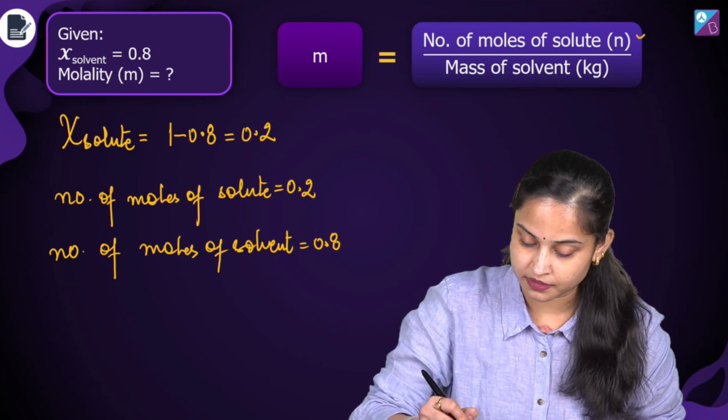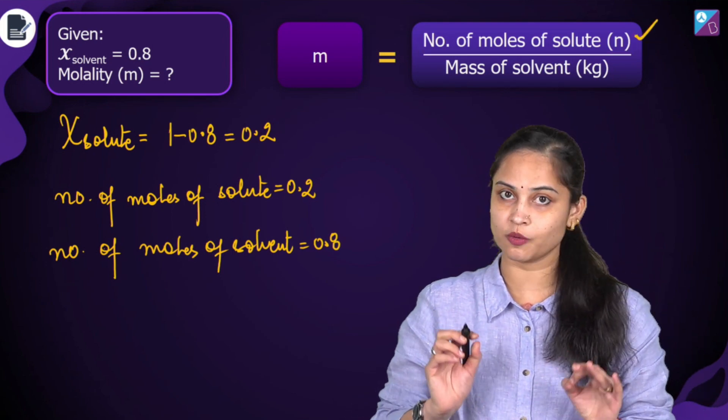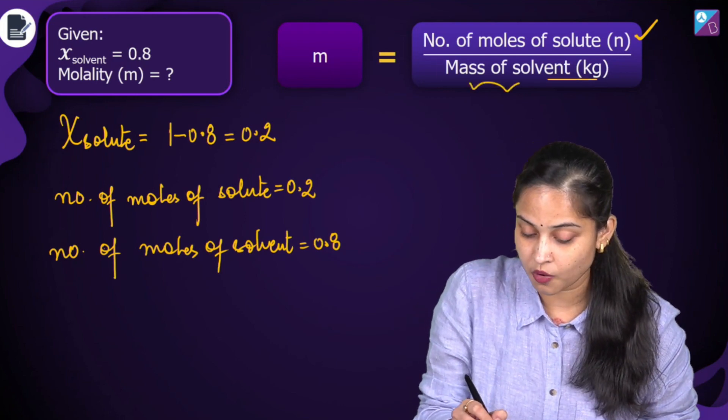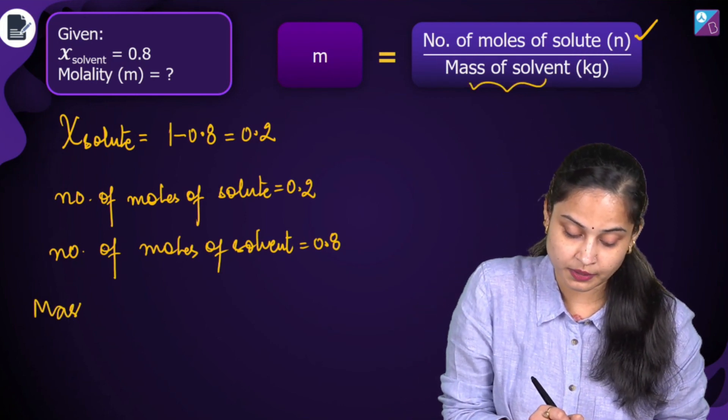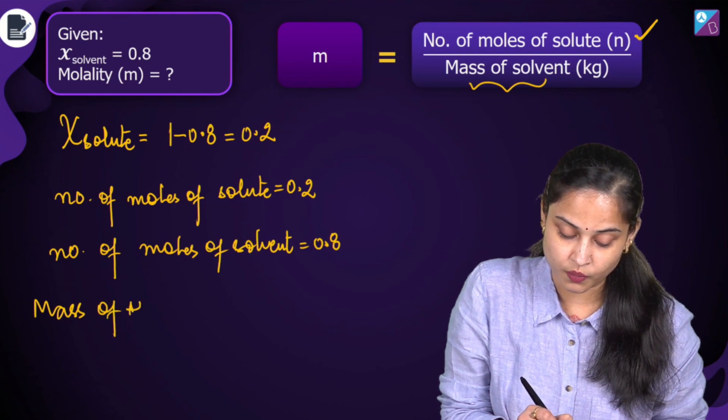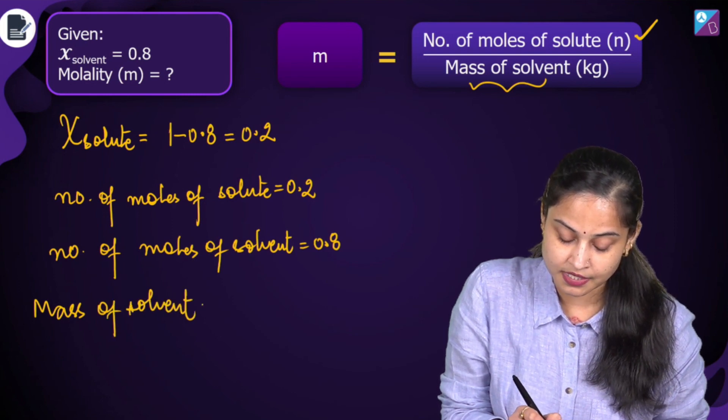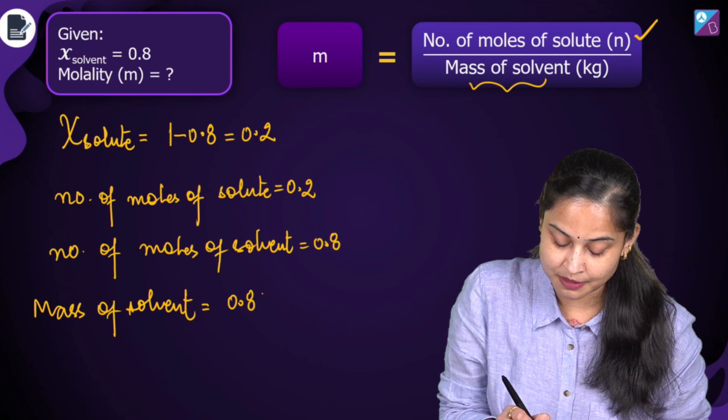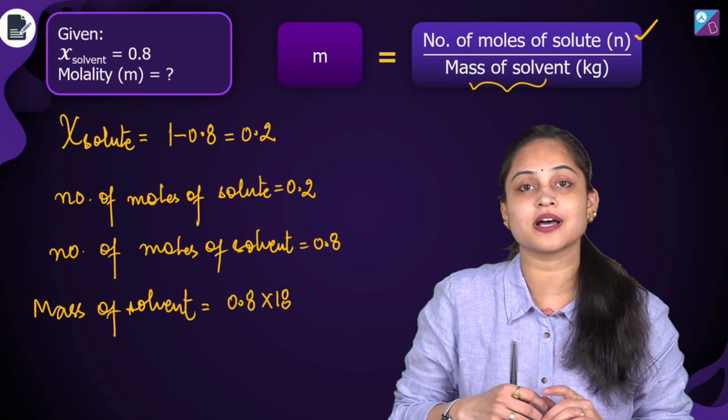That means we know this particular thing. Number of moles of solute we know is 0.2. We want to calculate now mass of solvent. So mass of solvent will be 0.8 multiplied by 18, the molar mass of water.